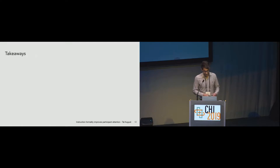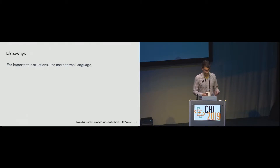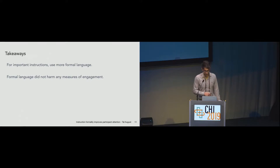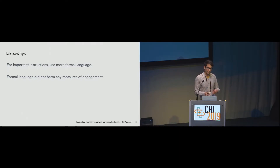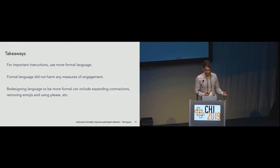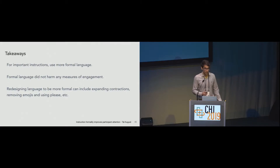So, what are the takeaways? First, for experiments where reading the instructions is important — such as if you have to have participants expand the screen fully or if the study has complicated instructions — using more formal language helps. Participants are more likely to pay attention and read instructional text fully. It's also important to note that formal language did not harm any measures of engagement. So if you're on the fence, formal language did not hurt engagement but did help with participants paying attention. Practical changes include expanding contractions, removing emojis, and using 'please' — all ways to increase the perceived formality of instructional text.